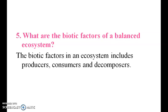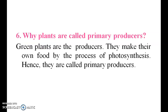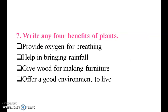What are the biotic factors of a balanced ecosystem? The biotic factors in an ecosystem include producers, consumers, and decomposers. Why are plants called primary producers? Green plants are the producers; they make their own food by the process of photosynthesis, hence they are called primary producers. Write any four benefits of plants: they provide oxygen for breathing, help in bringing rainfall, give wood for making furniture, and provide a good environment to live and grow.